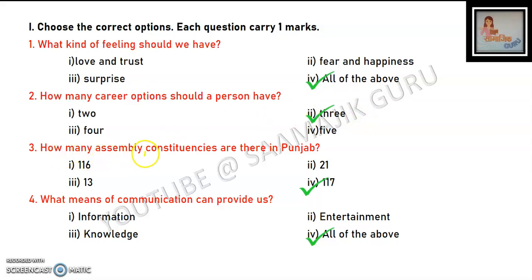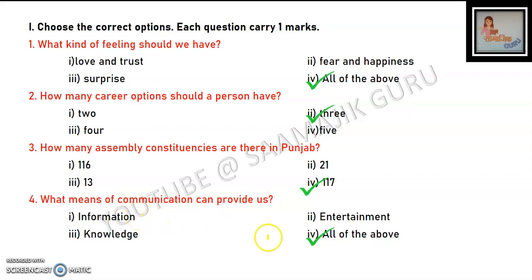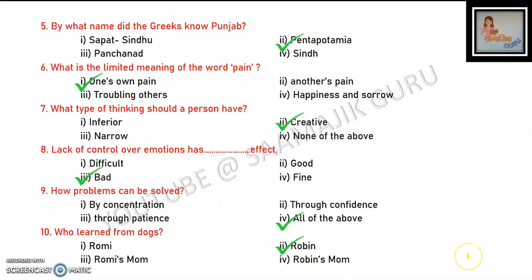How many assembly constituencies are there in Punjab? The answer is 117. What can means of communication provide us — phones, laptops, internet? They give us information, entertainment, and knowledge — so the answer is all of the above.